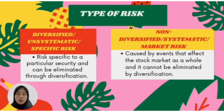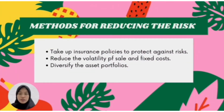Next is type of risk. Types of risk has two: diversifiable and non-diversifiable. Diversifiable risk is specific to a particular security and can be eliminated through diversification. Non-diversifiable risk is caused by events that affect the stock market as a whole and cannot be eliminated by diversification. Next, methods for reducing risk include: taking up an insurance policy to protect against risk, seeking to reduce the volatility of sales and fixed costs, and diversifying the asset portfolio.